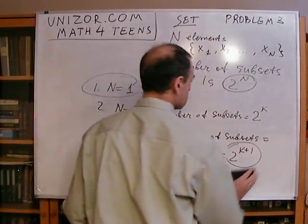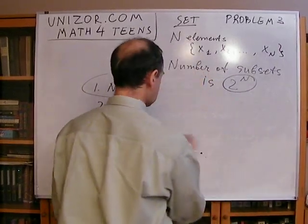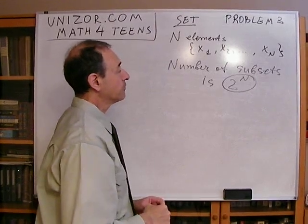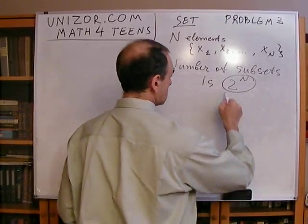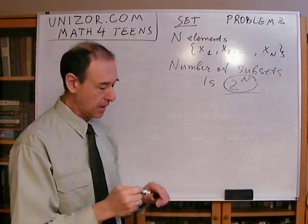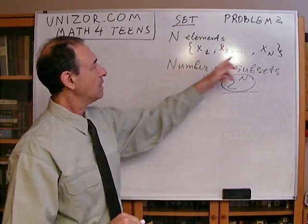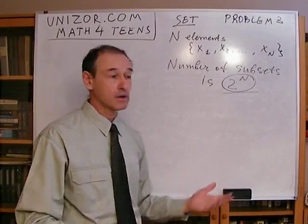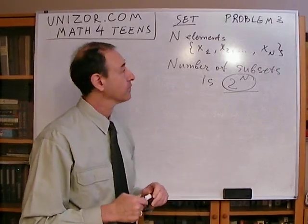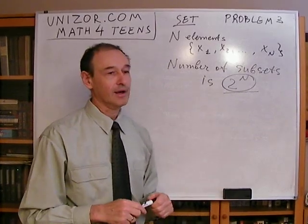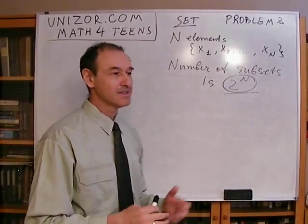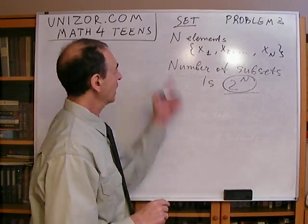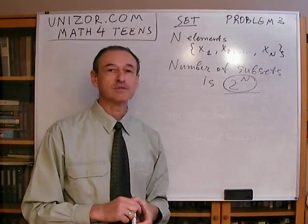Basically, given any set of n elements, the number of subsets it contains is 2^n — regardless of what kind of elements, as long as they're all different. It would be interesting if you can come up with some other proof of the same theorem. It's a very nice and simple formula — easy to remember. n elements, 2^n subsets. That concludes this particular problem. Thank you very much.